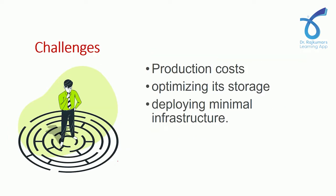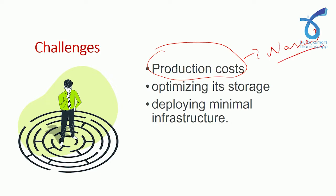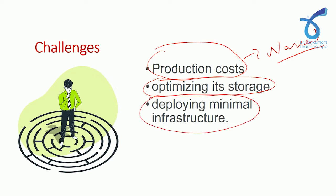The challenges in producing green hydrogen are significant. First, production costs are huge — as a nascent industry, the products are expensive because it is just the beginning. Second, optimizing its storage is another challenge; storage is becoming expensive and we are trying to make hydrogen affordable. Third, deploying minimal infrastructure is difficult because not all regions have solar and wind energy, and transporting renewable electricity to hydrogen power plants — called 'wheeling' of electricity — is a major challenge.